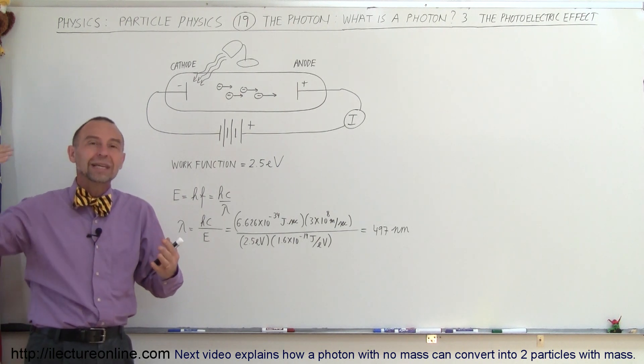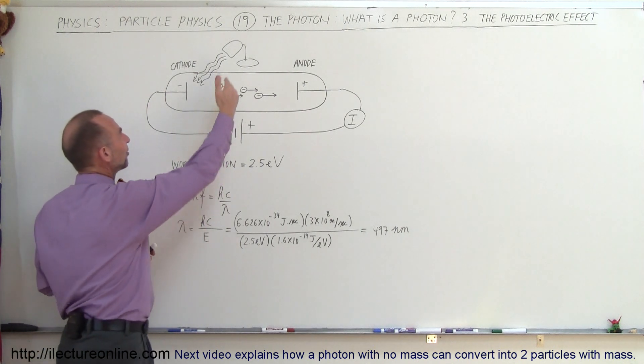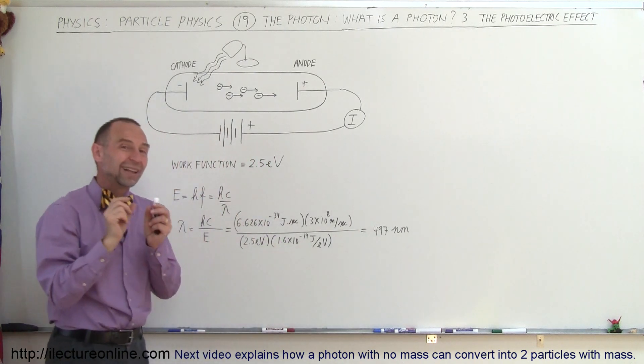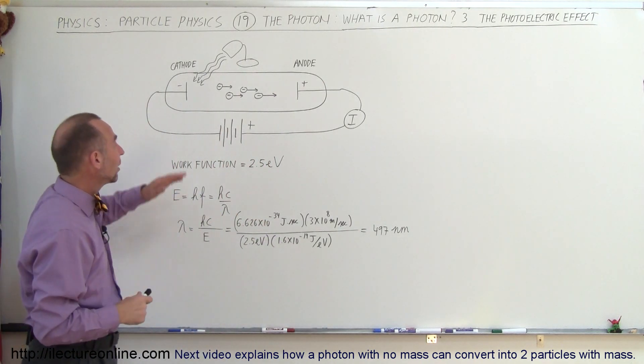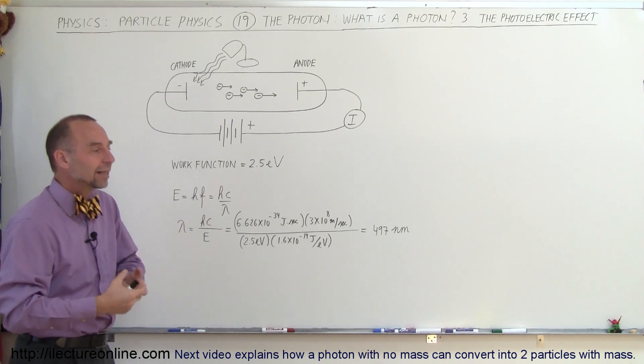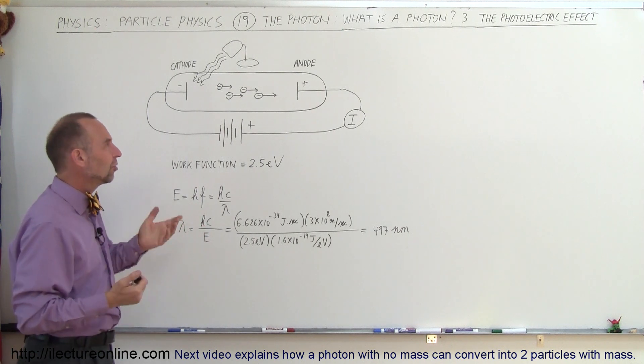the assumption would be that if you shine light on it of wavelengths that are greater than this, therefore less energy per photon, that you still should have a current because the energy would simply accumulate, and the electrons would eventually accumulate enough energy to jump free. But it turns out,